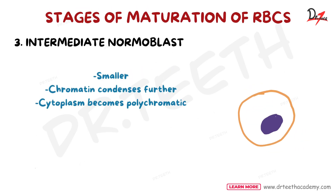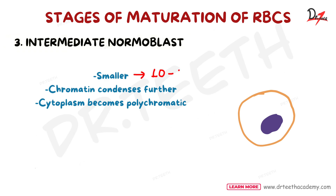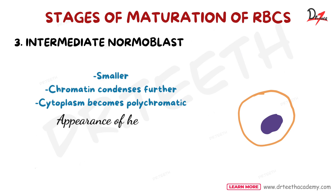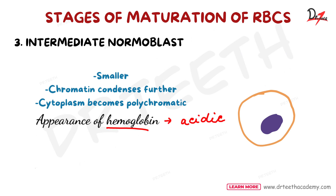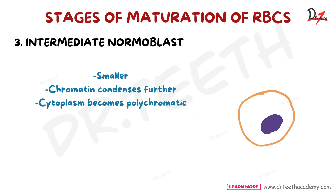The early normoblast develops into the intermediate normoblast. Here the cells are even smaller — from 15 micrometers down to 10 to 12 micrometers. The nucleus is still present but the chromatin network shows further condensation. Importantly, this is the stage where hemoglobin first appears — a key exam point. Due to the presence of small quantities of acidic hemoglobin, the cytoplasm becomes polychromatic, so this cell is called the polychromatophilic or polychromatic erythroblast.